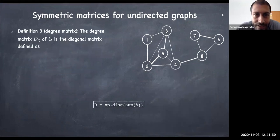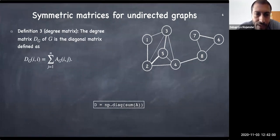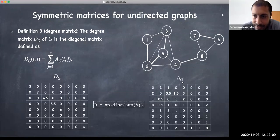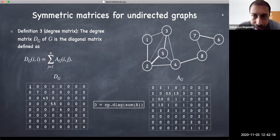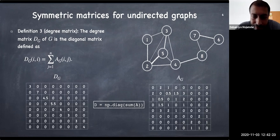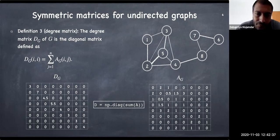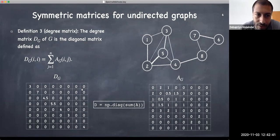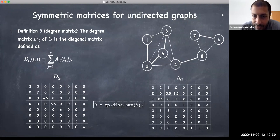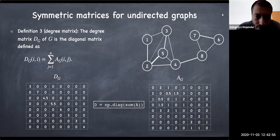The degree matrix D of G is the diagonal matrix where every diagonal entry is the sum of the weights of that row. Since we are considering a weighted graph, the degree is the sum of the weights of the edges — instead of counting edges as 1 each, we sum their weights. So the degree is a weighted degree. This Python code will give you the matrix D.